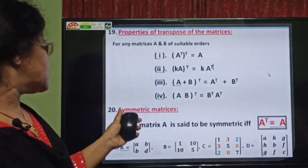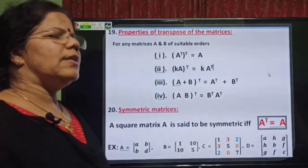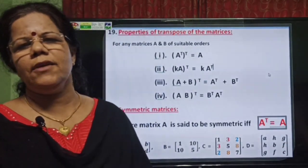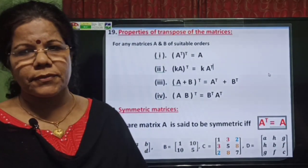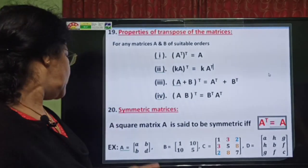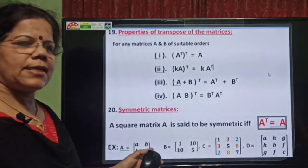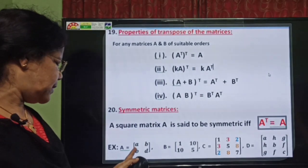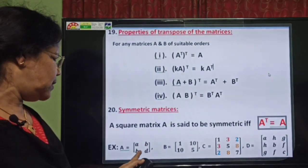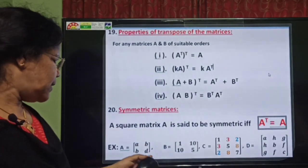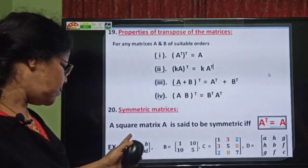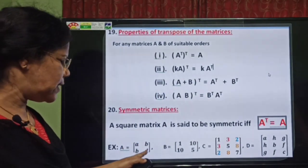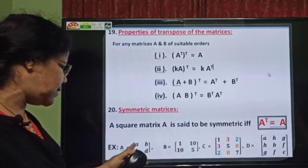The next concept is symmetric matrices. A square matrix A is said to be symmetric if A-transpose is equal to A. Here some examples are given. Matrix A equals the matrix with entries A, B, B, D. Here you can see A-transpose will be the same — A only. A-transpose is equal to A, so A is a symmetric matrix.